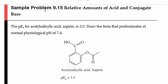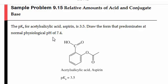Let's look at sample problem 9.15. The pKa for acetylsalicylic acid, otherwise known as aspirin, is 3.5. Draw the form that predominates at the normal physiological pH of 7.4. Pause the video to do this.